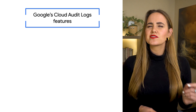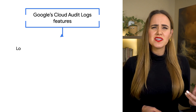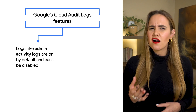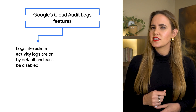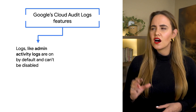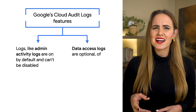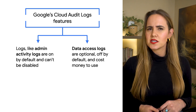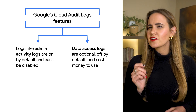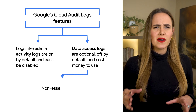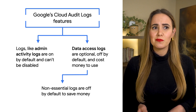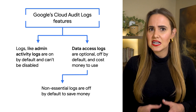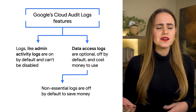When it comes to Google's Cloud Audit Logs, some types of logs, like admin activity logs, are on by default and can't be disabled. Others, like data access logs, are optional, off by default, and cost money to use. Logs that are not essential are turned off by default to save users money, because the logs could take up a large amount of data that would apply against Google's quotas and limits.